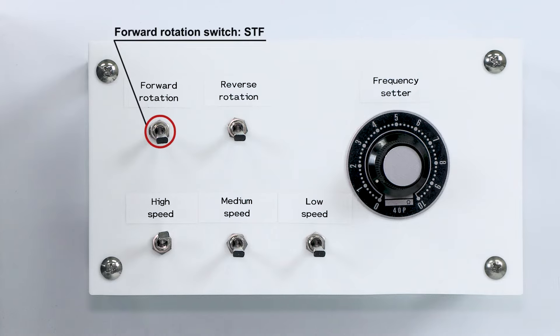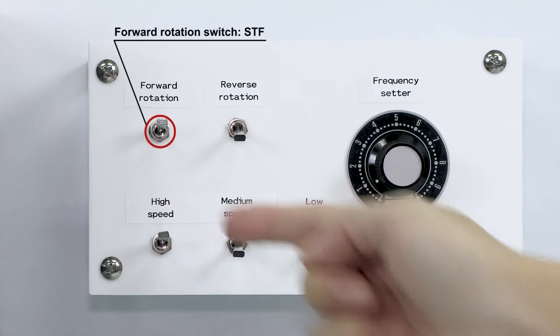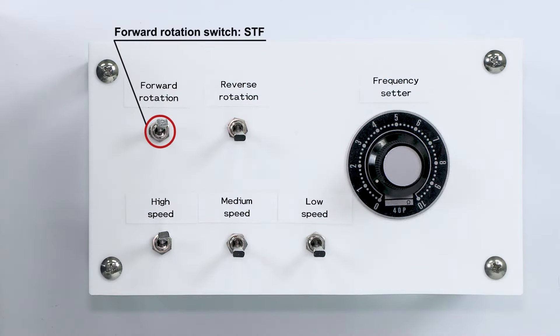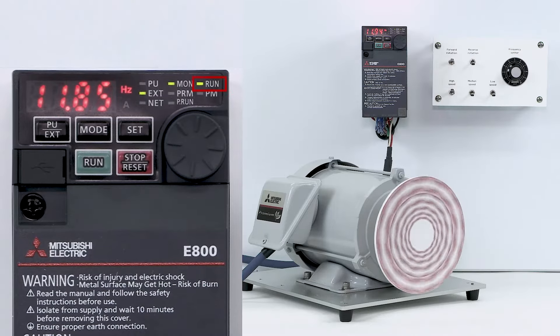Turn the STF switch on to start forward rotation. The RUN LED will turn on. The frequency will increase to 60 Hz.